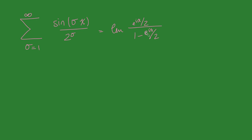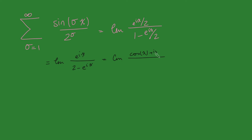To clean this up, we'll first multiply top and bottom by 2, giving us e to the ix over 2 minus e to the ix. Now in order to take the imaginary part, we need to get this into the form a plus bi, so we multiply top and bottom by the conjugate of the denominator. Writing out the top: cos x plus i sine x, using Euler's formula. And the bottom is 2 minus cos x minus i sine x, using Euler's formula.